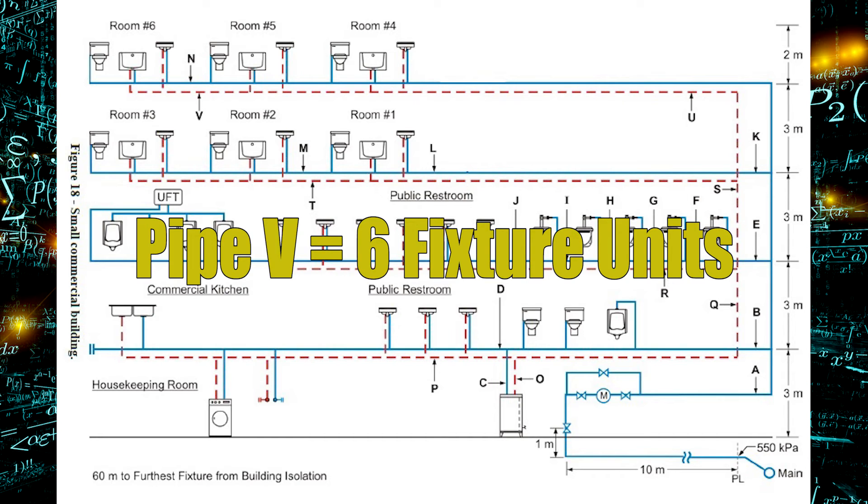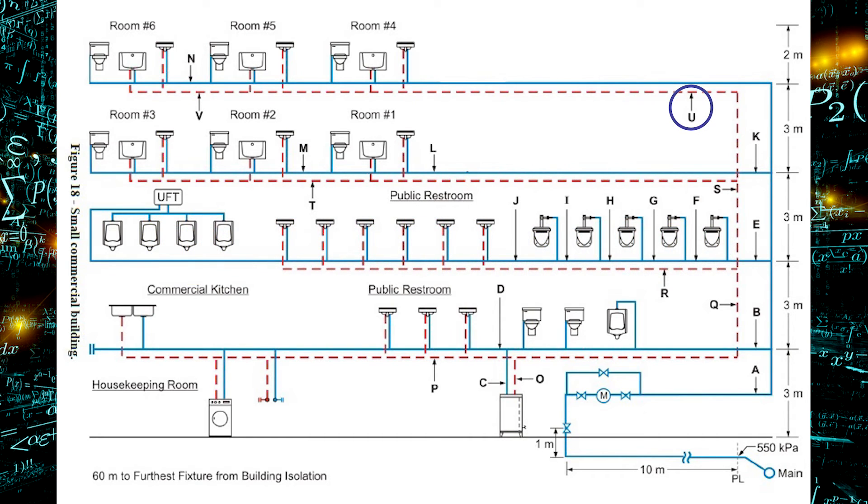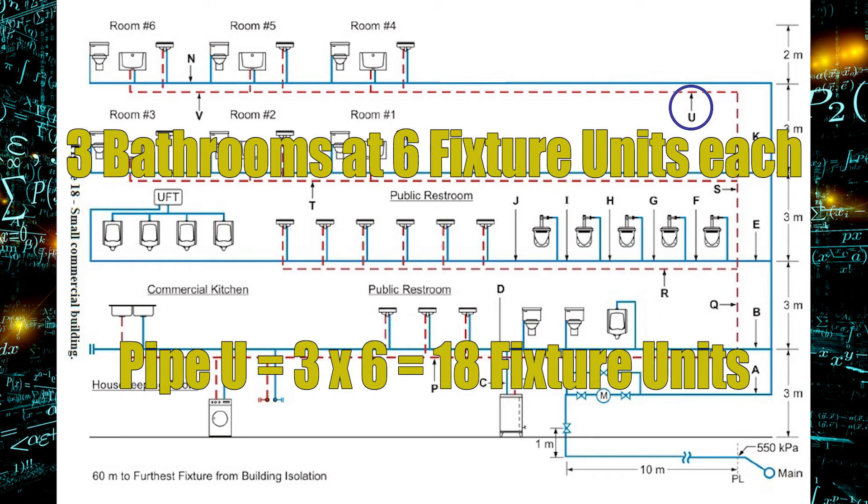If I move over to pipe U, I have three bathrooms now being supplied, and each bathroom was six fixture units each. So that would be 18 fixture units traveling through pipe U, and that will supply the hot water to those three bathrooms upstairs.